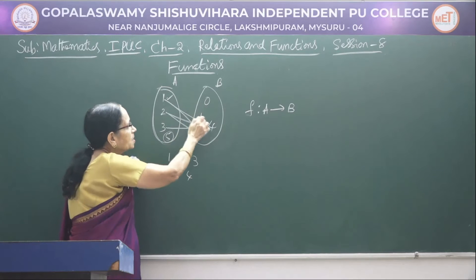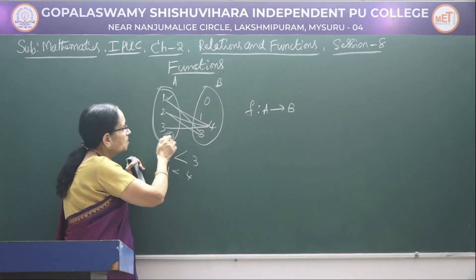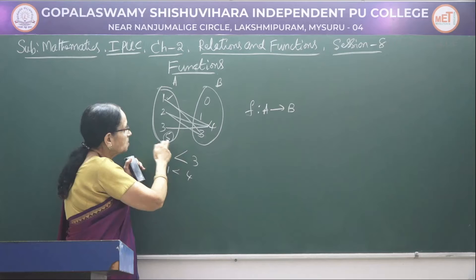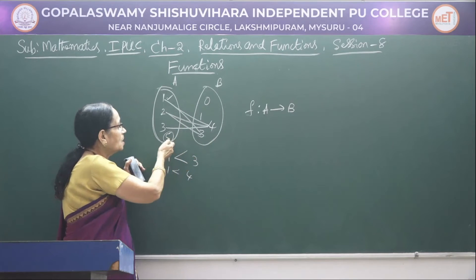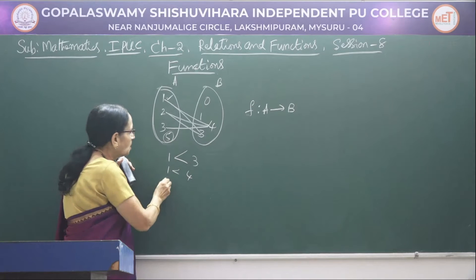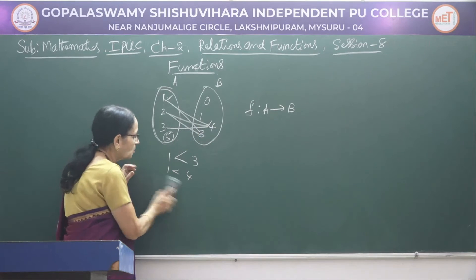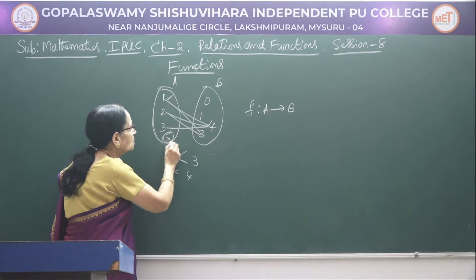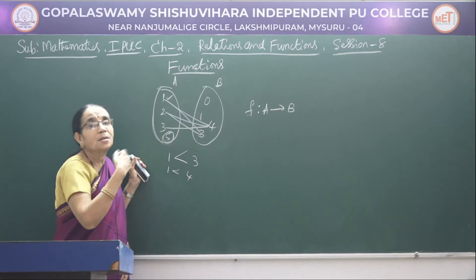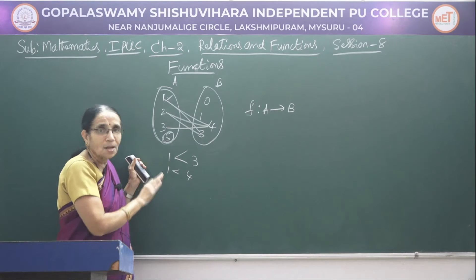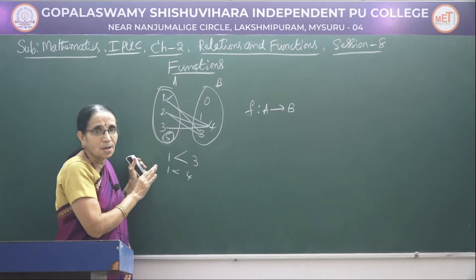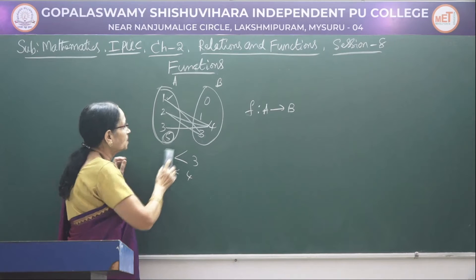For element 5, you observe that all the second set elements are less than 5, so 5 cannot be less than any of them. This number 5 does not have any association at all. So this is a relation — you can take this for a relation, but it cannot be a function.